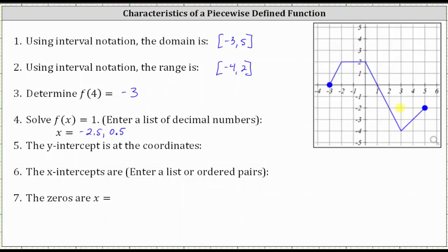Number five, we're asked to find the y-intercept, or vertical intercept, of the graph. This is where the graph touches or crosses the y-axis, which is this point here, where the ordered pair is 0, comma 2. So the y-intercept is given by the ordered pair 0, comma 2.